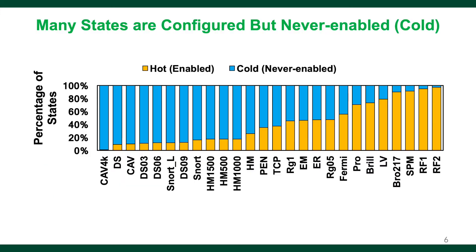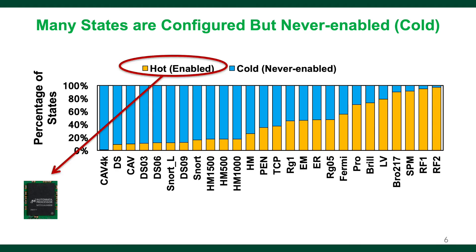In our characterization, we observed that a large portion of states are never enabled, hence do not need to be configured to AP. Configuring hot states only can reduce the total number of states on AP.